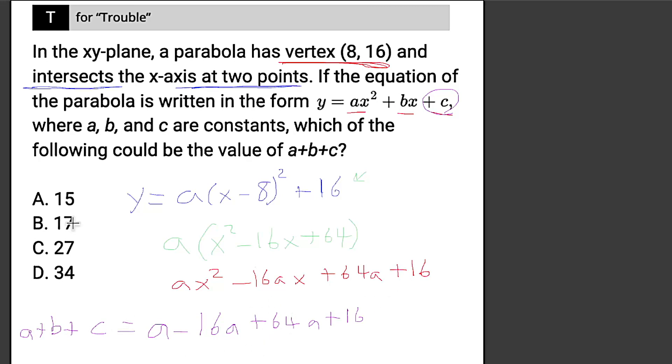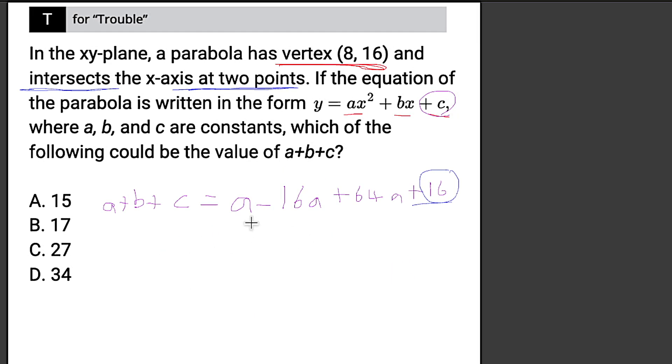All that right there. Now, I do want to simplify that. So I'm going to go ahead and make some space and move this up. So this would simplify to 49a. And that's A minus 16. So 1 minus 16 plus 64. 49 plus 16. And then this is going to be equal to our answer choices.